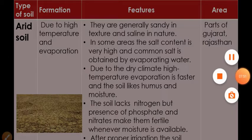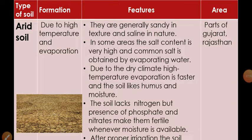Next is arid soil, which is completely hopeless in terms of irrigation and cultivation. It is saline in nature — the soil is so saline you could make salt from the water. Water retention is not happening. In some semi-arid regions, after irrigation, some crops can grow. The formation of this soil is due to high temperature and high evaporation. This is easy to remember because arid soil is found in Rajasthan, where the temperature is very high and therefore evaporation rate is also very high.